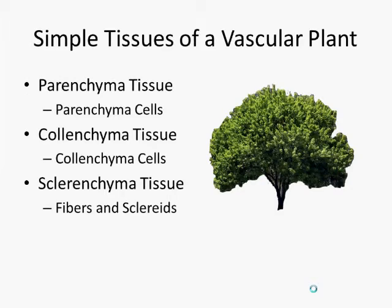Parenchyma, collenchyma, and sclerenchyma tissues are made up of parenchyma cells, collenchyma cells, fibers, and sclereids, respectively.